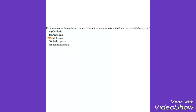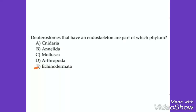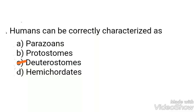Protostomes that have a closed circulatory system and obvious segments are annelids. Protostomes with a unique layer of tissue that may secrete a shell are the mollusks. Deuterostomes that have an endoskeleton are part of which phylum? The answer is echinodermata. Humans can be correctly characterized as deuterostomes.